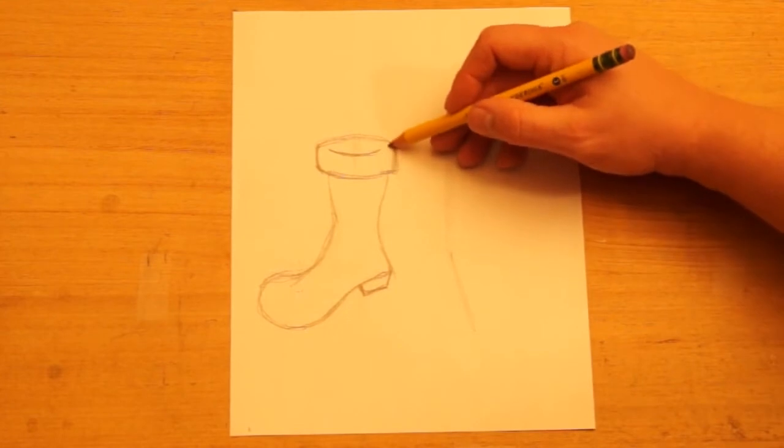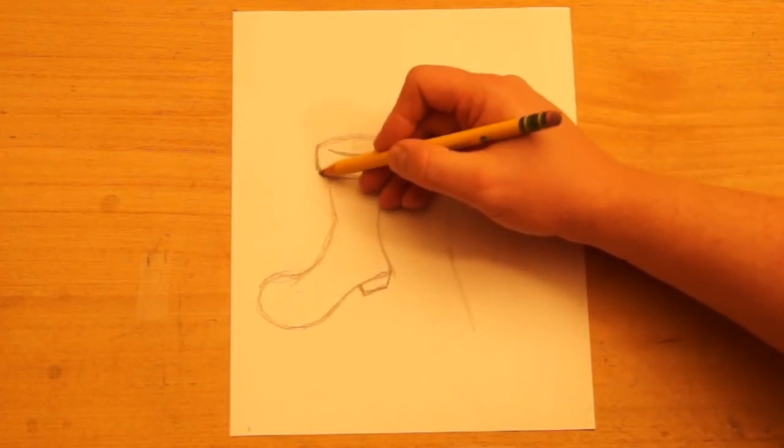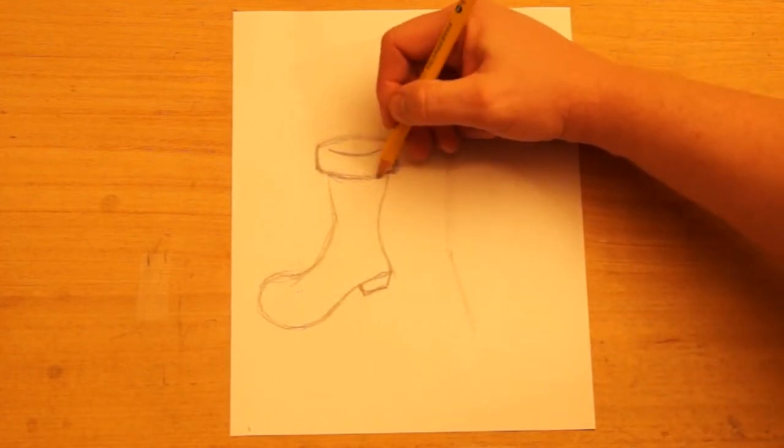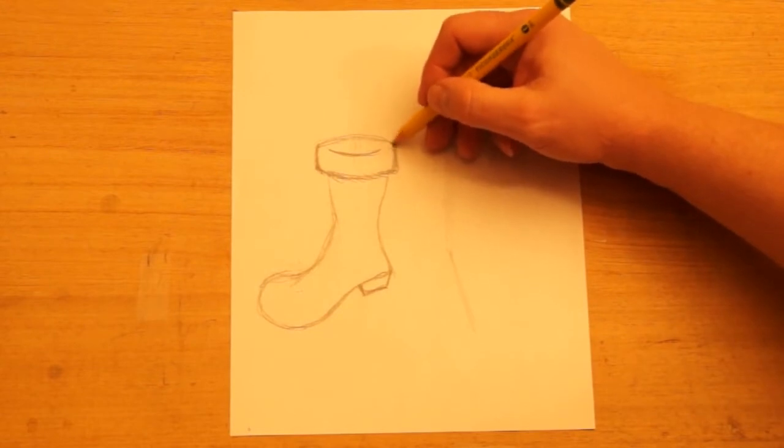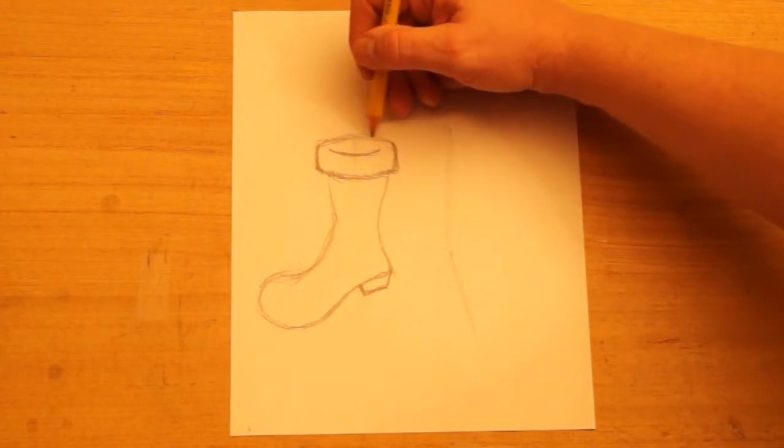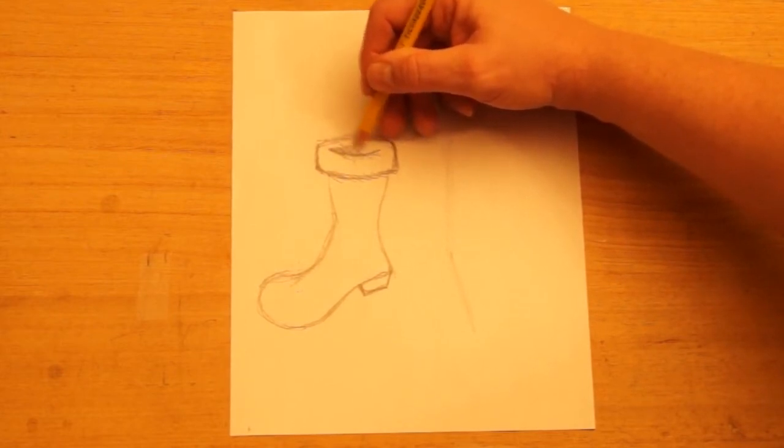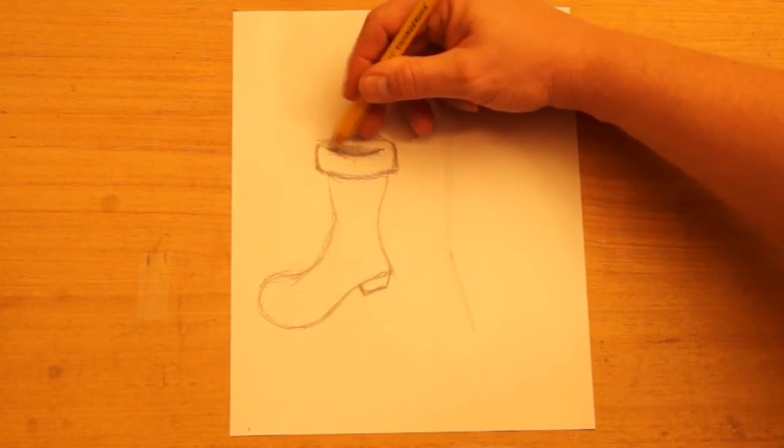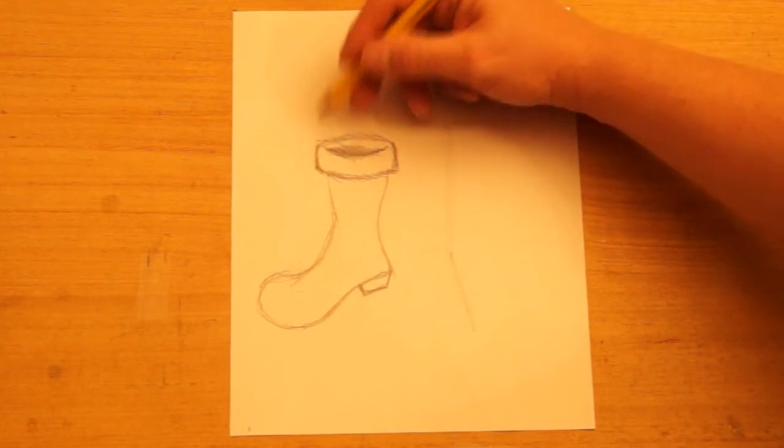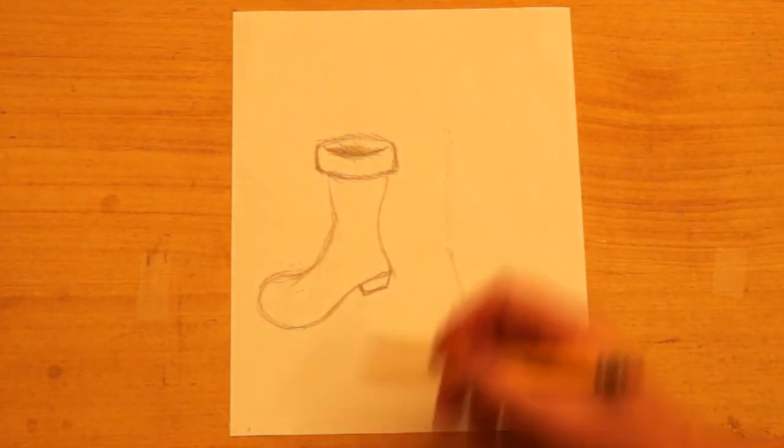This part is fur, so I'm going to make short little lines around the edge to make it look more like fur. And some across here. Then I can shade inside just to show that it does go down inside.